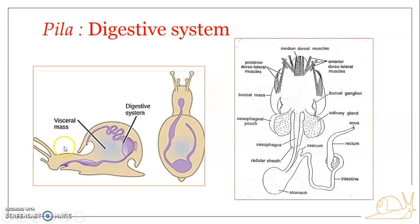The alimentary canal of Pila globosa, as you can see here, is a coiled tube. It extends from the mouth and terminates in the anus. Due to the torsion of the visceral mass, the alimentary canal is almost like a U-shaped tube — it is distorted, not a straight tube. The alimentary canal also shows a distortion due to this torsion of the visceral mass.